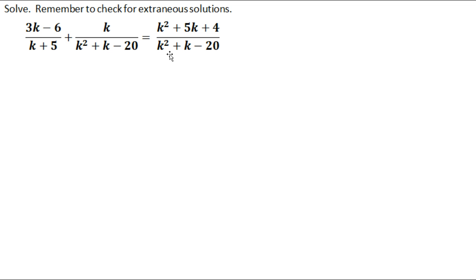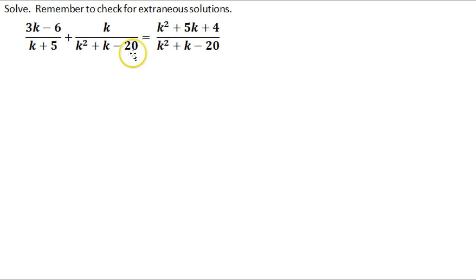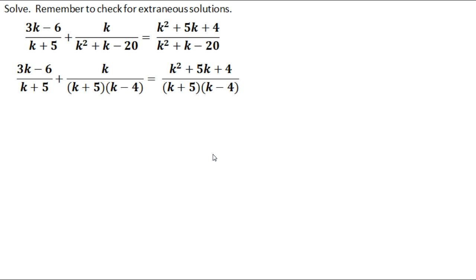The very first thing I'm going to need to do is factor this. Fortunately, both of these are the exact same quadratic expression, so as long as we factor one, it'll work for the other. When we're factoring, I need two numbers that multiply together to give me negative 20, but add together to give me positive 1 — this b value. That should be positive 5 and negative 4. So I rewrote this with the quadratic expression in factored form.